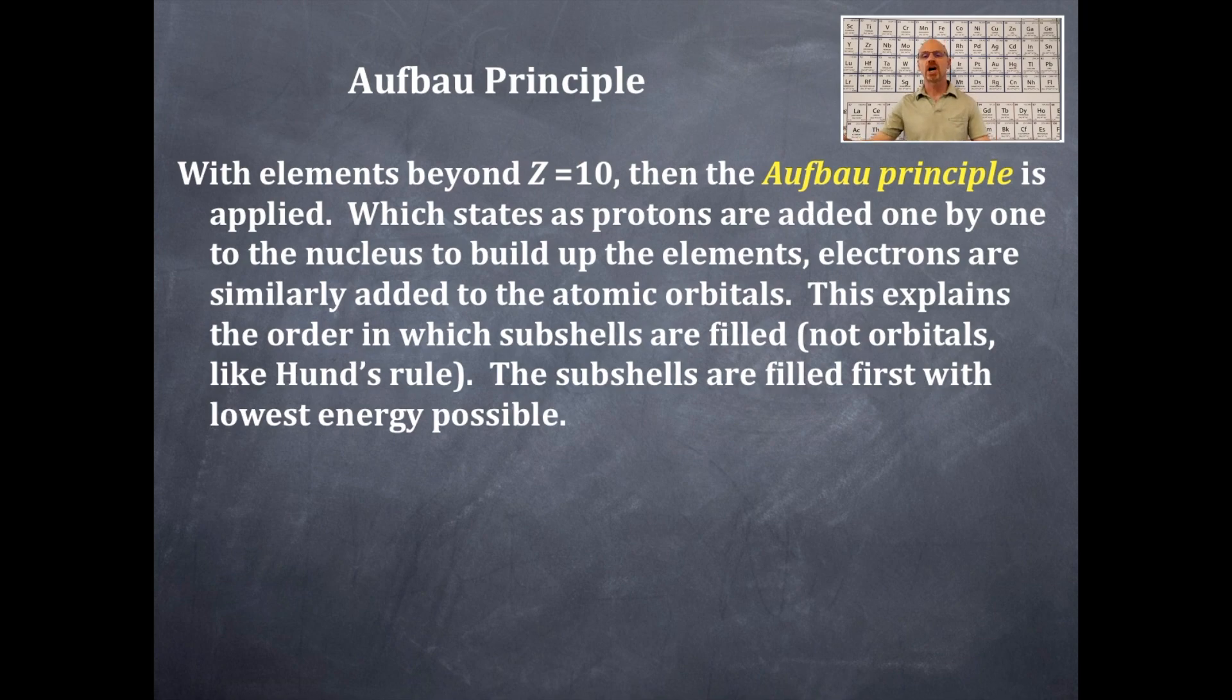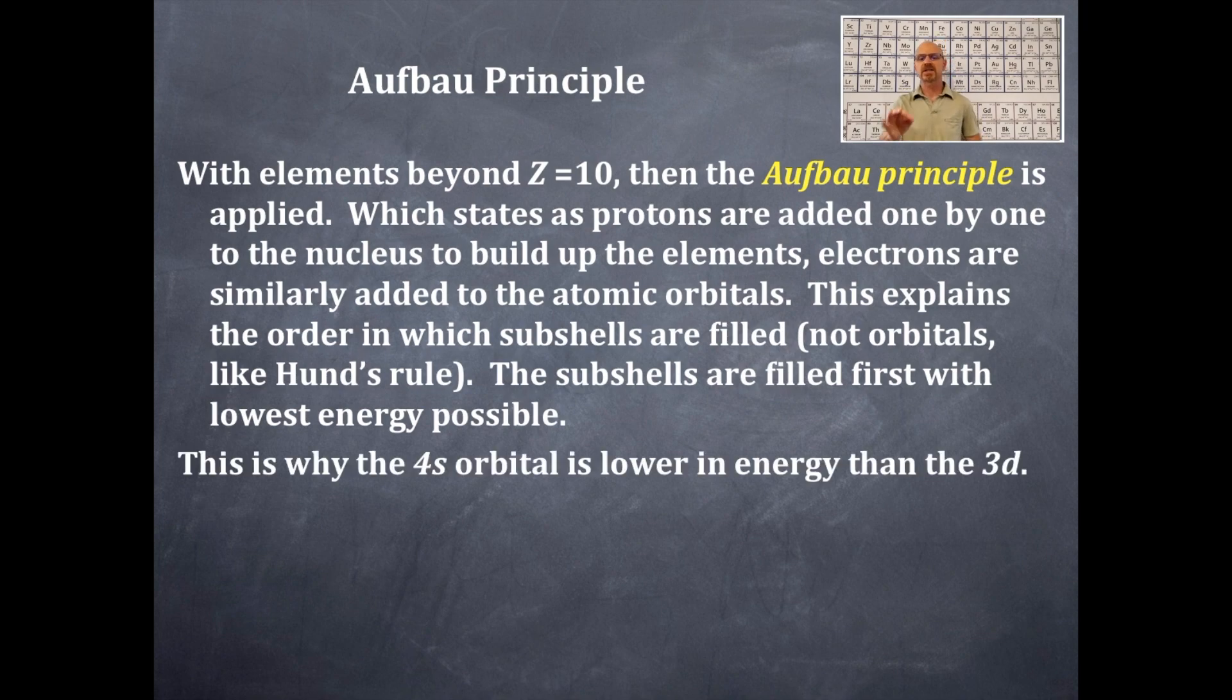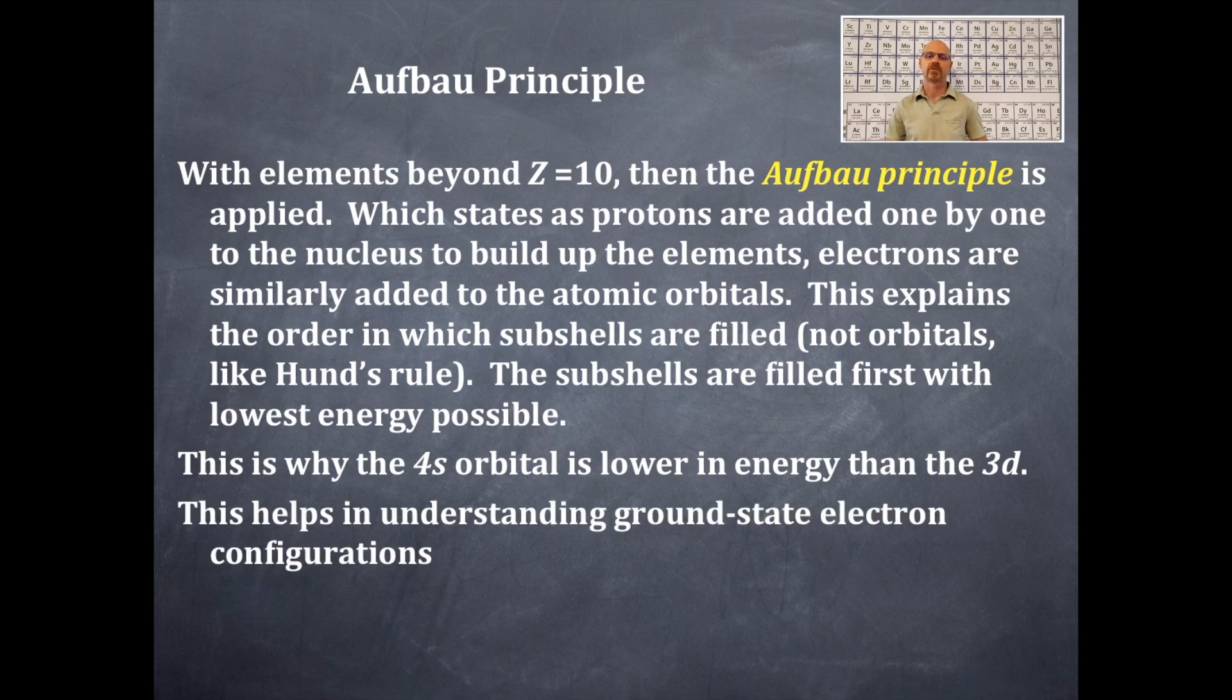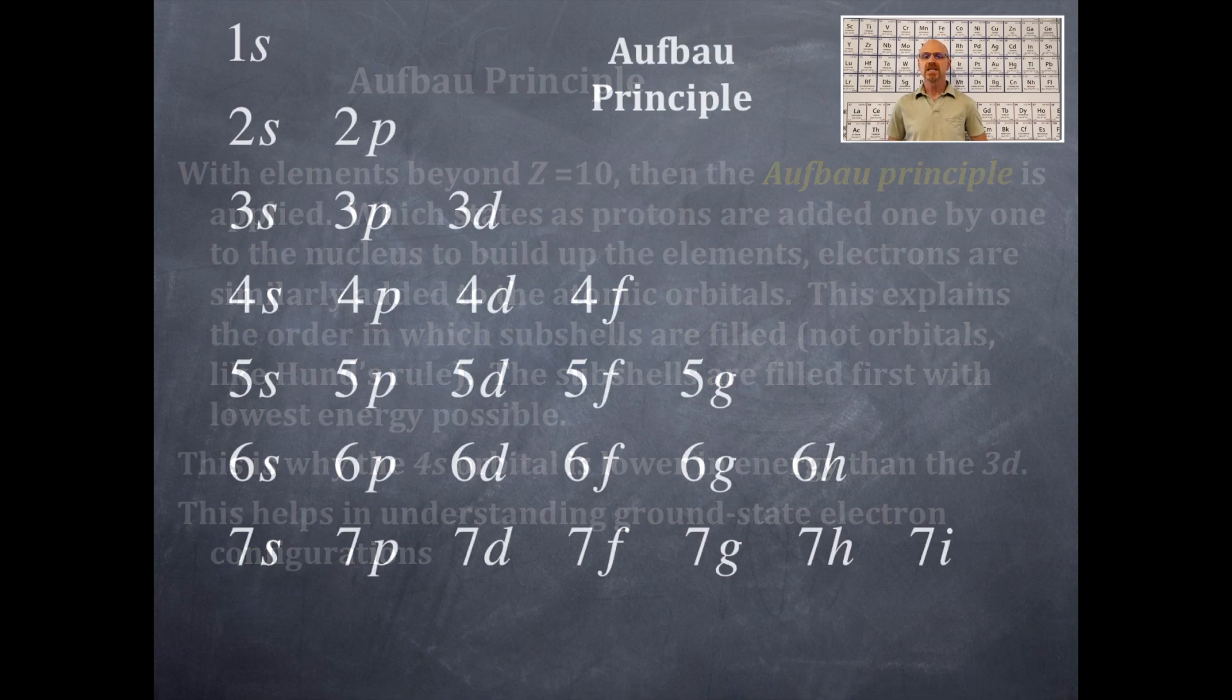When elements beyond Z of 10, then the Aufbau Principle is applied, which states as protons are added one by one to the nucleus to build up elements, electrons are similarly added to atomic orbitals. This explains the order in which subshells are filled, not orbitals like Hund's rule. The subshells are filled first with lowest energy possible. This is why the 4s orbital is lower in energy than the 3d orbital, for example. This helps in understanding ground state electron configurations as well.